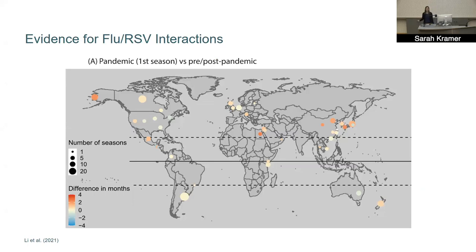This goes together with an observation from human populations during the 2009 influenza pandemic. Influenza circulated much earlier than normal, and RSV outbreaks were delayed by several weeks in many countries — particularly in the Northern Hemisphere where the pandemic hit at the beginning of the normal RSV season. However, a negative interaction is only one possible explanation for this observational data. It's also possible that people were more careful during the pandemic about where they took their young children, which could explain the delayed RSV outbreaks.